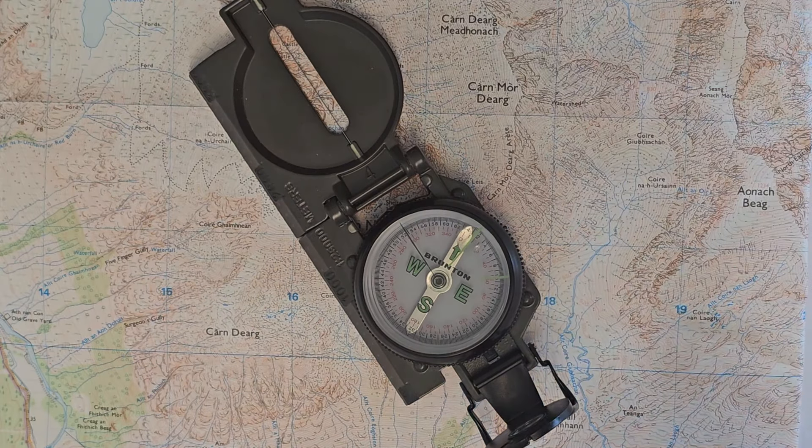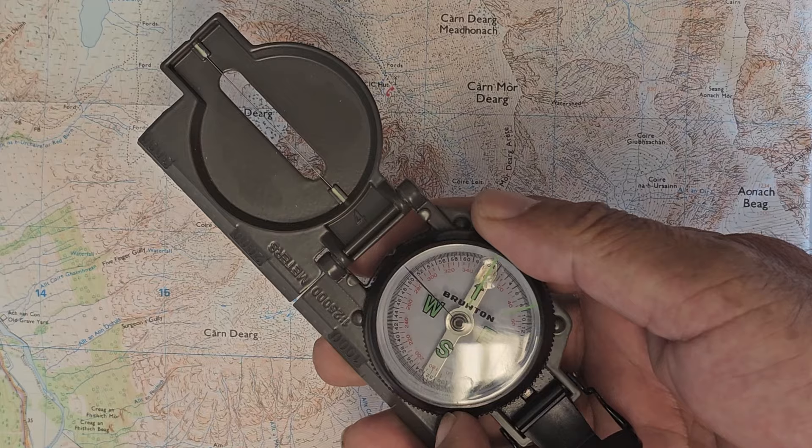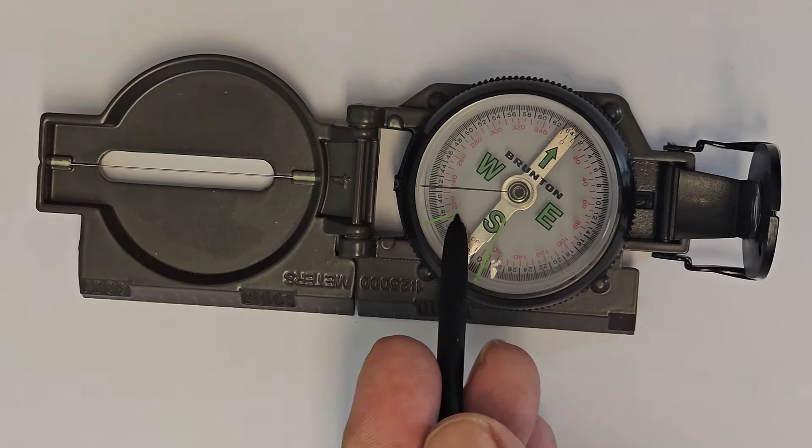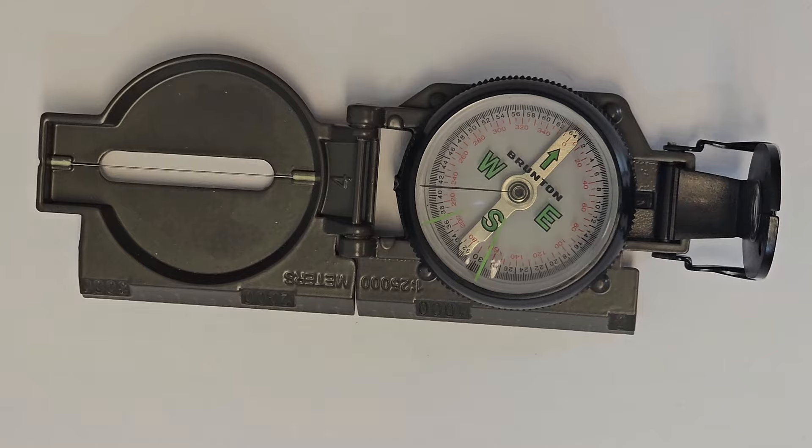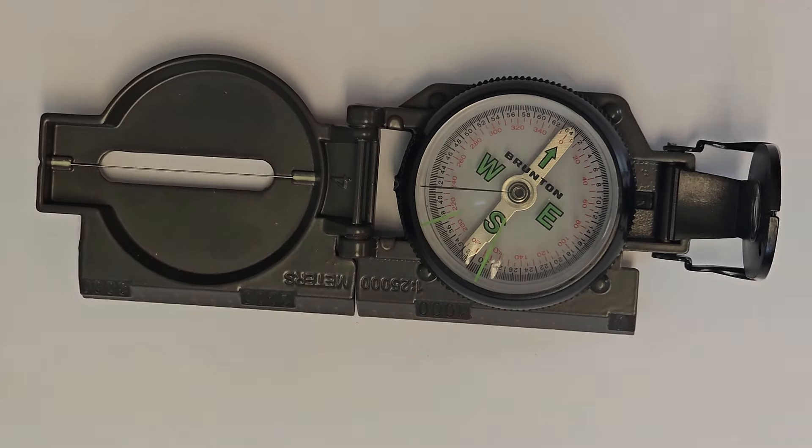To follow the bearing, just hold the compass with the long green line over the north pointer and walk towards the wire. The short green line was used in the past to speed up night navigation, but I don't have time to go through that today. I made a video showing how this was done and I'll put the link in the description box.